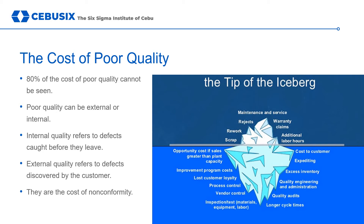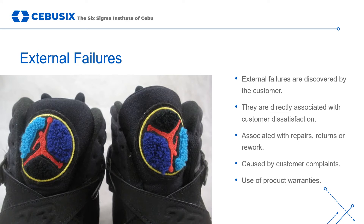External and internal failures are often referred to as the cost of nonconformity — the expenses that occur when outputs do not conform to critical-to-quality requirements. External failures usually occur after products or services have been delivered, meaning they are directly associated with customer dissatisfaction. These might include revenue losses from reduced sales due to quality issues, expenses associated with repairs, returns, or rework from customer complaints, expenses associated with warranties, or loss of revenue because of customer ill will or bad word of mouth.